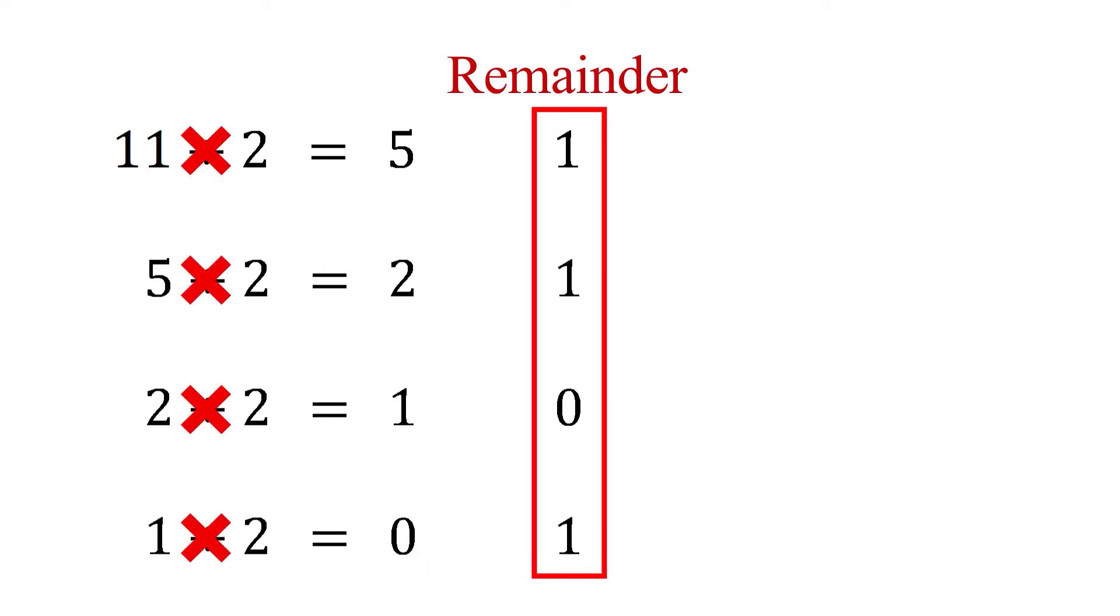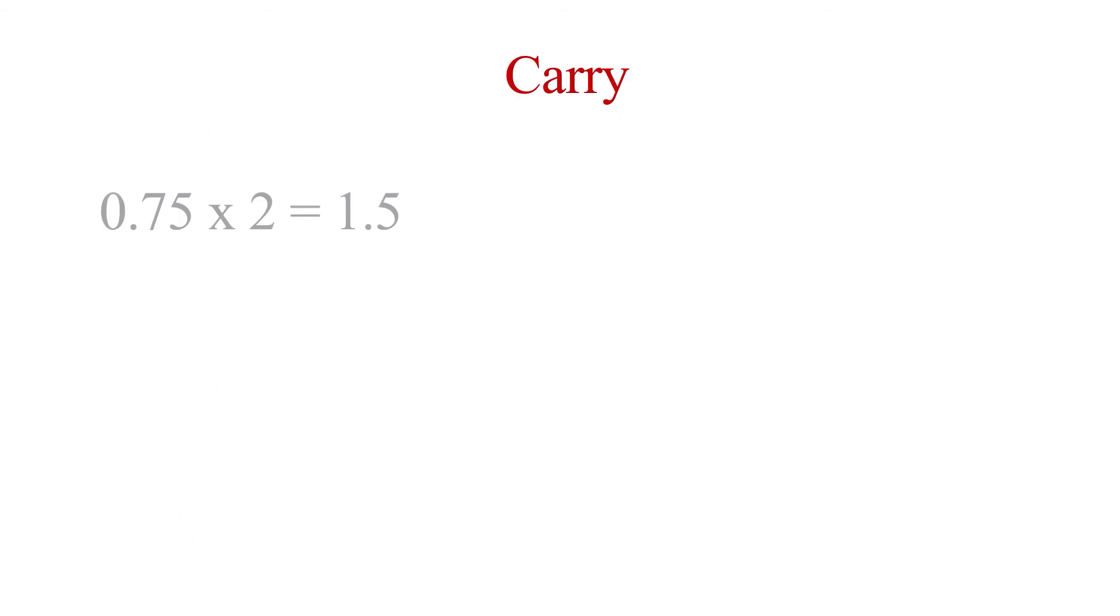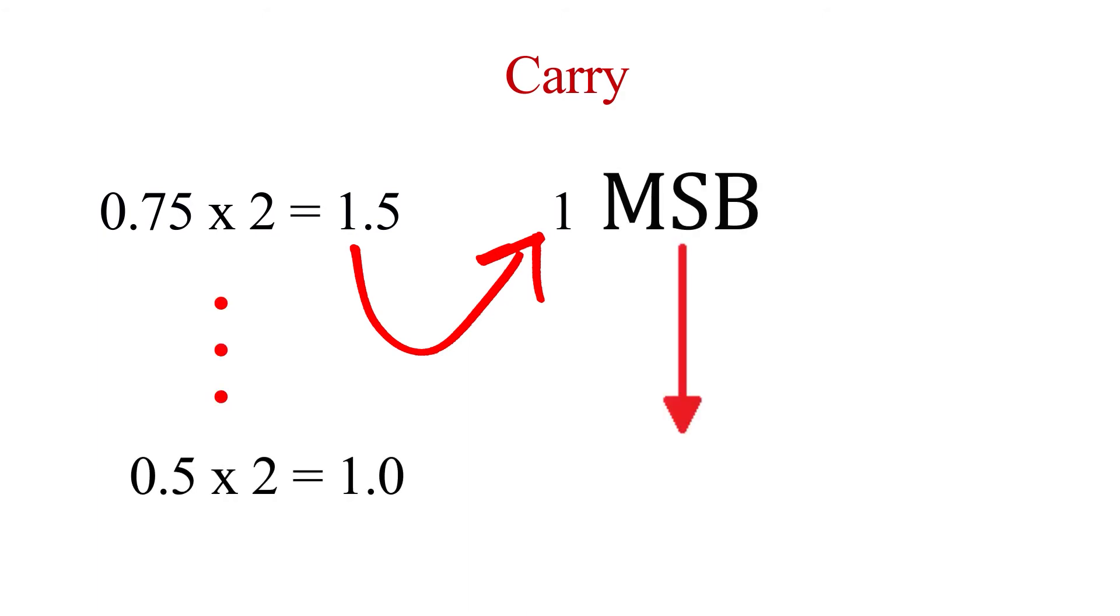Since we're now multiplying instead of dividing, we no longer have a remainder column. Instead, we have a carry column. When a multiplication by two puts us over the decimal place, we put that one in the carry column. And since we're multiplying instead of dividing, our first multiplication is the most significant and the last multiplication, when the answer comes to one exactly, is the least significant.